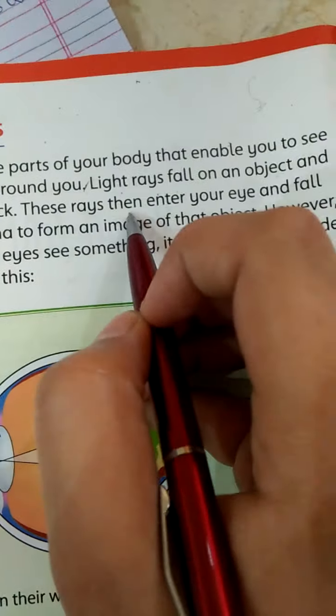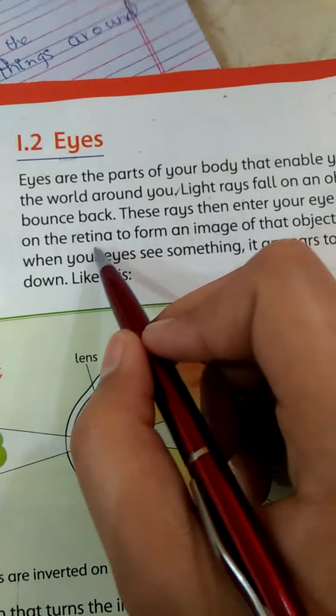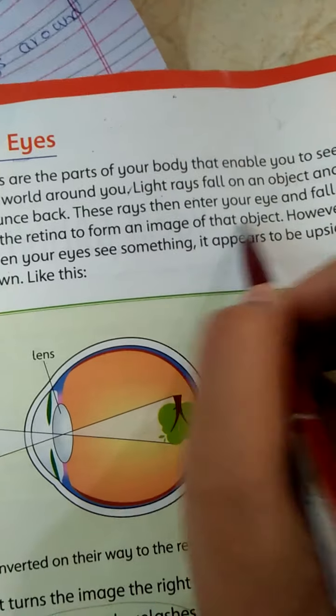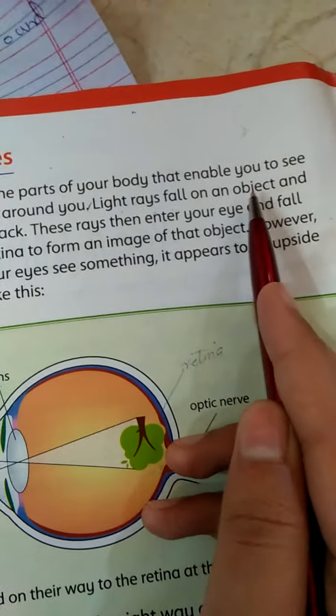These rays then enter your eye and fall onto the retina to form an image of that object.